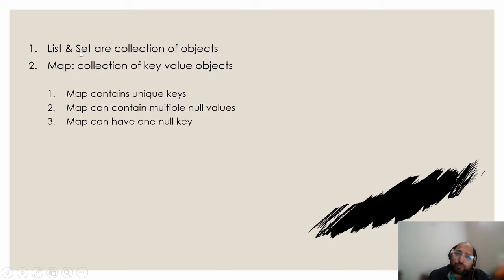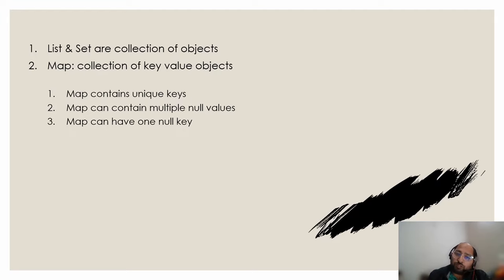Before moving on, let's understand the need for Map. Using List and Set we can store duplicate or unique values, but what if we want to store employee names as well as their ages? List and Set cannot help us there. Map is used to store key-value pairs. Map contains unique keys, can contain multiple null values, but only one null key.